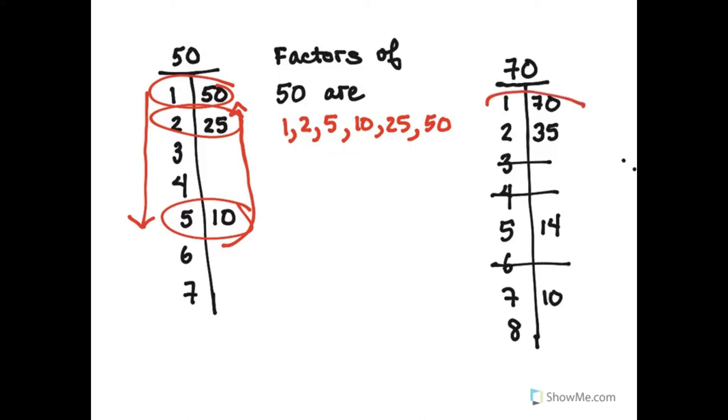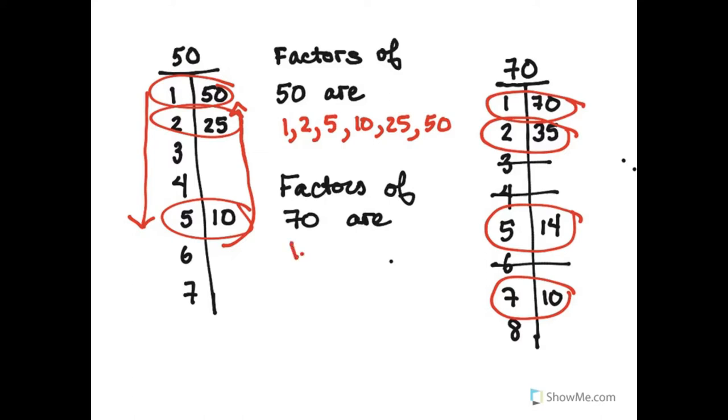I found them all. 1 and 70, 2 times 35, 5 times 14, and 7 times 10. So factors of 70 are 1, 2, 5, 7, 10, 14, 35, and 70.